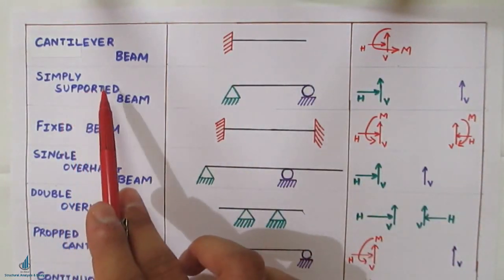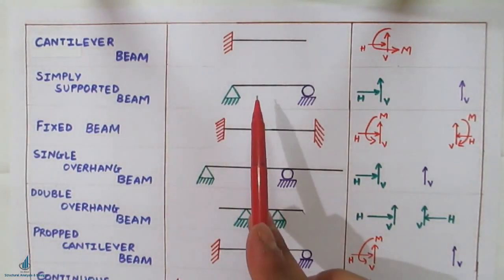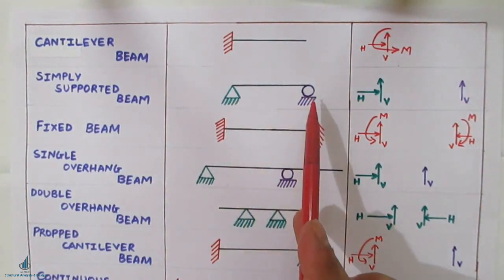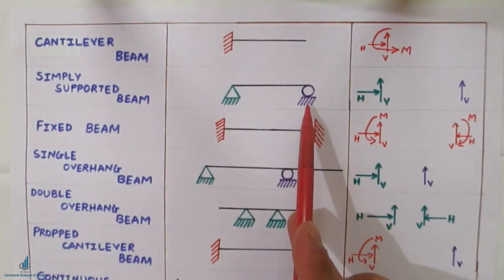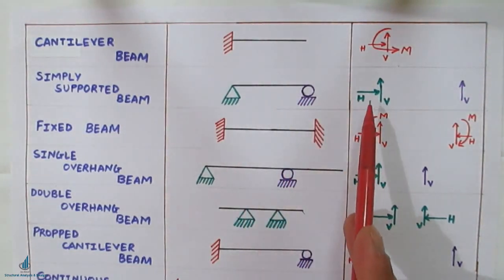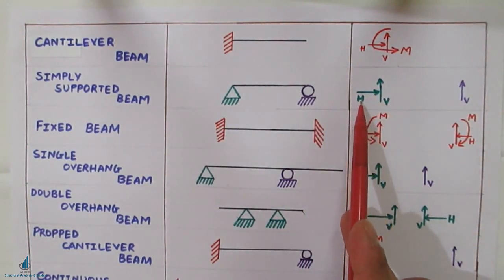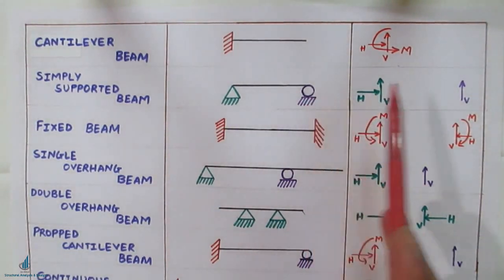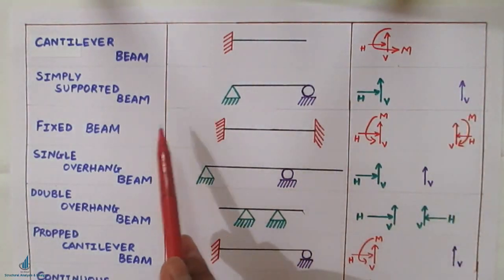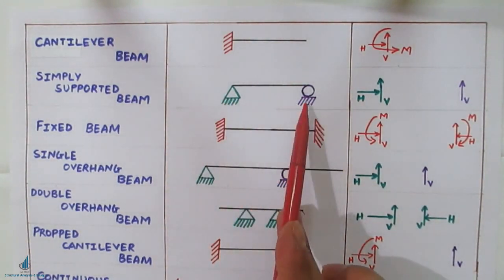The next type is simply supported beam. A simply supported beam has one side hinged and the other side having a roller support. The hinge has two reactions — one vertical and one horizontal — and the roller has only one vertical reaction. In some cases, both sides are shown as hinged, which is also acceptable.